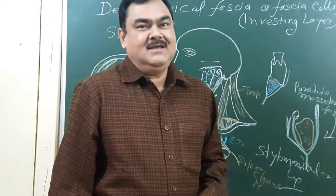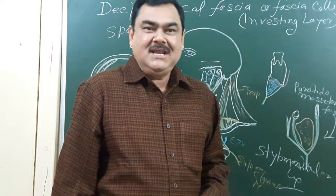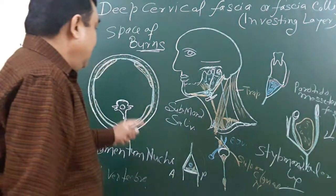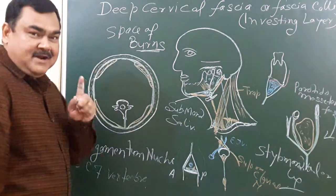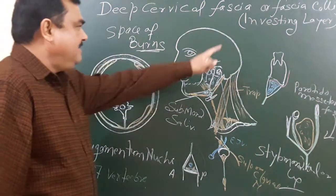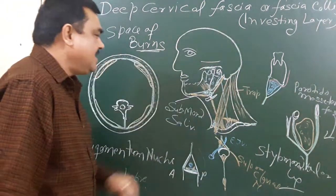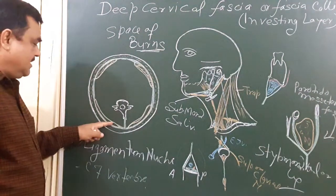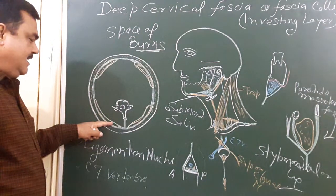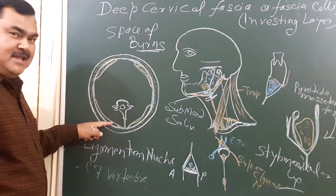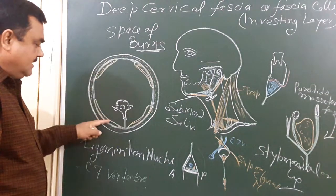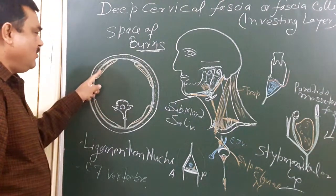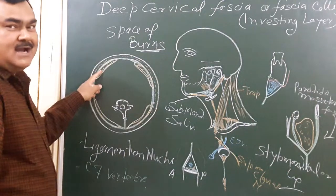Now we will sum up the investing layer of deep cervical fascia. Remember, this investing layer of deep cervical fascia covers two muscles — it splits and encloses two muscles: trapezius and sternocleidomastoid on each side.